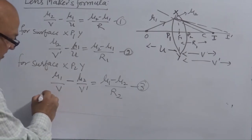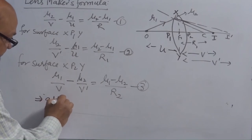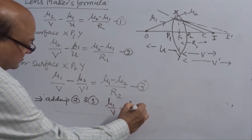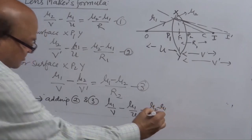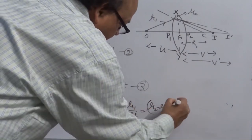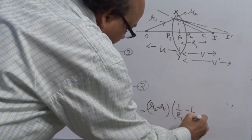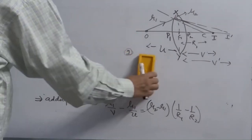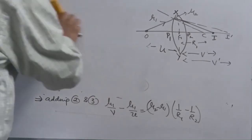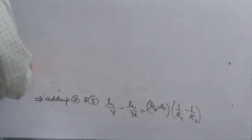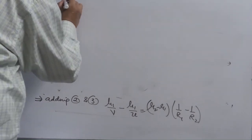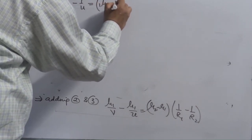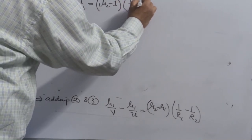Equations 2 and 3. What you will obtain while you are adding? Adding 2 and 3. You will obtain mu1 over V minus mu1 over U is equal to mu2 minus mu1, 1 over R1 minus 1 over R2. Now, see mu1, you can take common in the left hand side. So take mu1 as common and divide and take it in the right hand side. What you will have in the left hand side? 1 over V minus 1 over U is equal to mu12 minus 1, 1 over R1 minus 1 over R2.